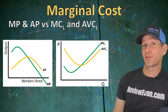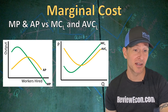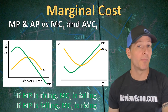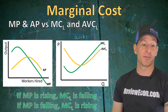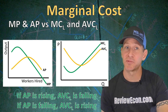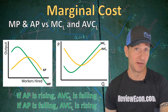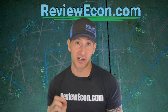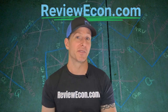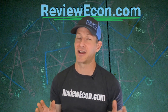If we compare the marginal product and average product curves to the marginal cost of labor and average variable cost of labor curves, we will see that they are flipped upside-down versions of each other. When marginal product is rising, marginal cost of labor is falling; when marginal product is falling, marginal cost of labor is rising. Likewise, if average product is rising, average variable cost of labor is falling, and vice versa. That is what you need to know about the production function. Head over to ReviewEcon.com and pick up the total review booklet to ace your microeconomics or macroeconomics exam — I'll see y'all next time.